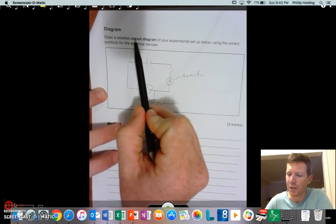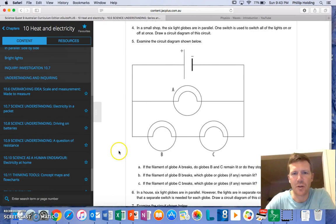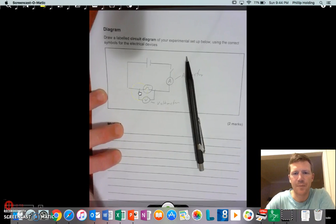Now you'll notice here it says draw a labeled circuit diagram. So you're after a circuit diagram, not a picture, something like this. You've got the cell, you've got the globe, you've got the connecting wires.